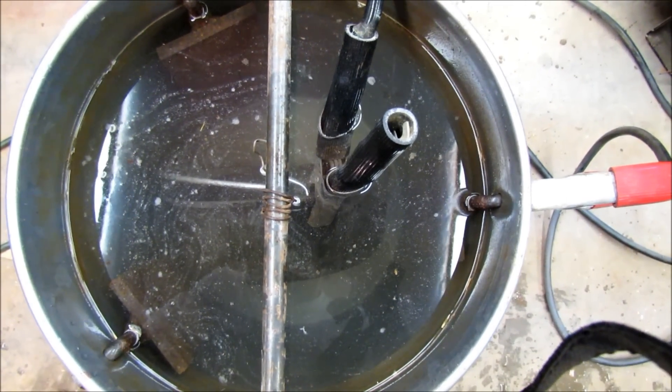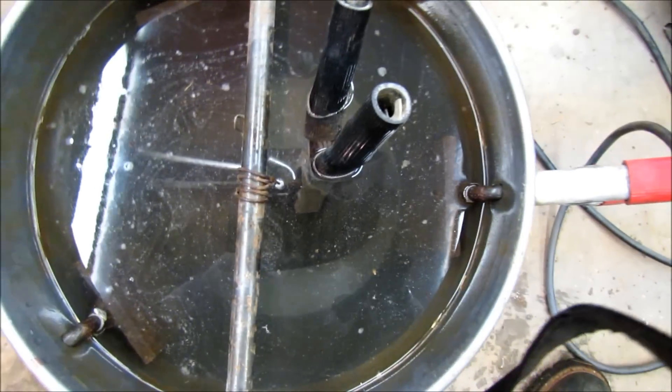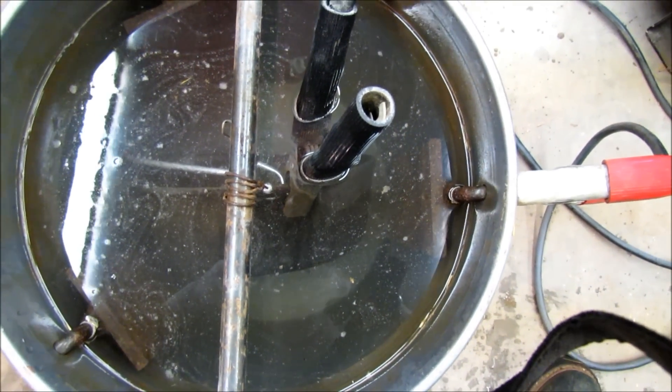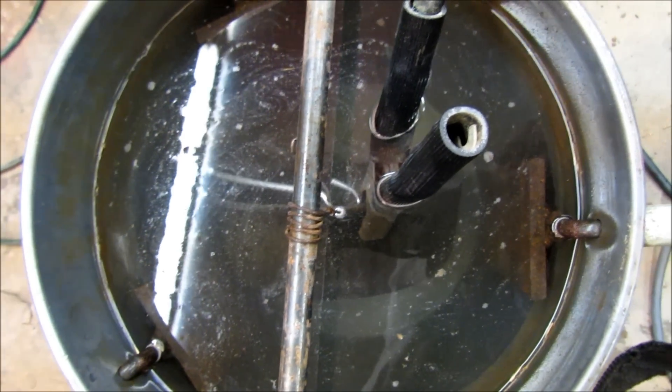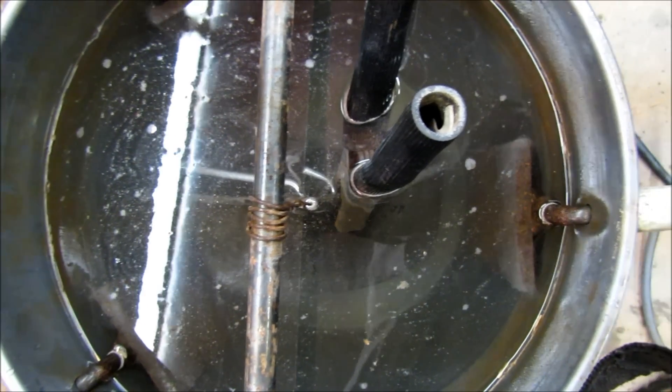You've got to be careful it doesn't touch the steel plates that the positive lead is hooked to. You just hook the negative lead to the piece you're de-rusting. I'm going to go ahead and turn the charger on. Let me see what it starts doing here.